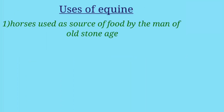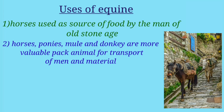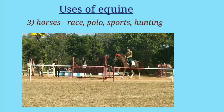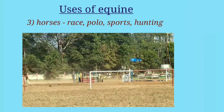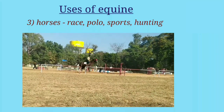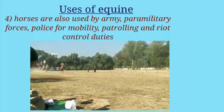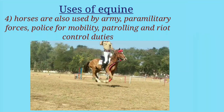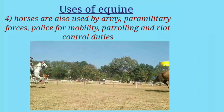Regarding the uses of equines: horses were used as a source of food by men of the Old Stone Age, and still in countries like France, Belgium, and many other parts of the world, horses are used as meat animals. Horses, ponies, mules, and donkeys are the most valuable pack animals for transportation of men and materials. In many parts of India, horses are widely used for racing, polo, horse sports, hunting, and various other purposes. Horses are also used by the armies, paramilitary forces, and the police for mobility, patrolling, and riot control duties.